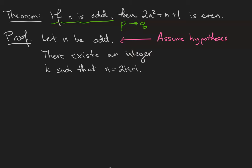All right, well what does it mean to be odd? So our next step is to unpack the definition of the word odd. Odd means that there exists an integer k such that n is equal to 2k plus 1. Notice that I'm not using an example.